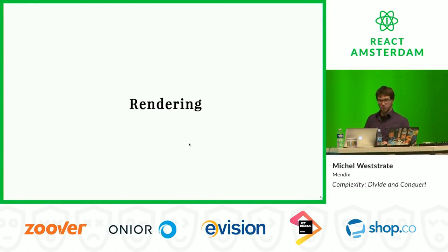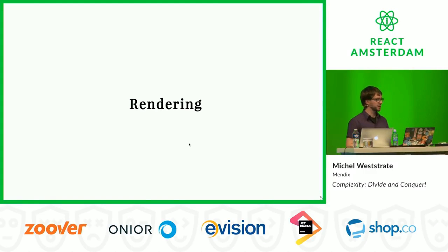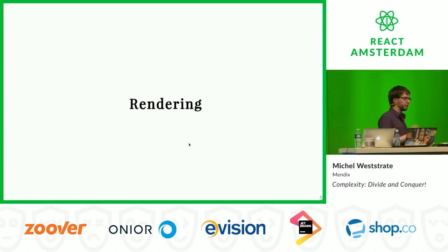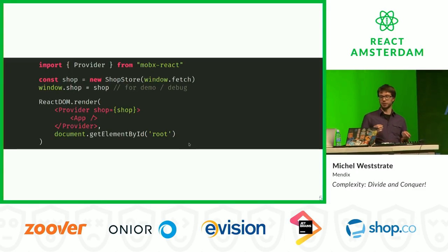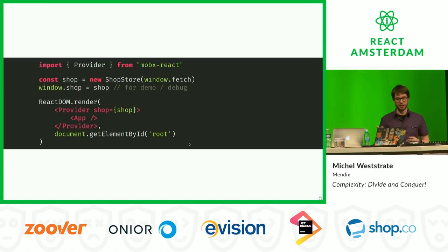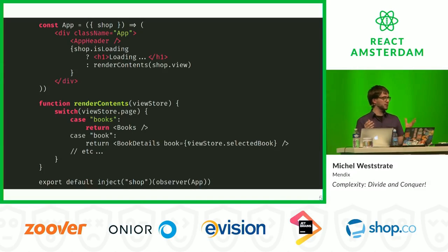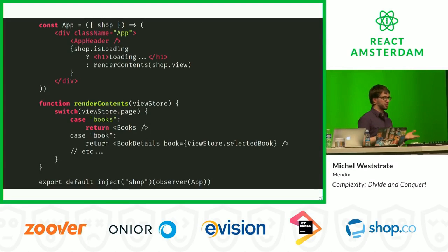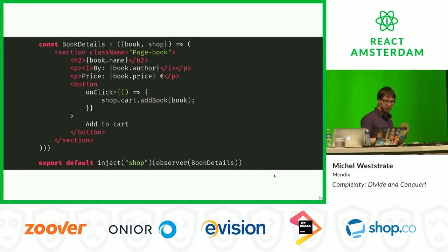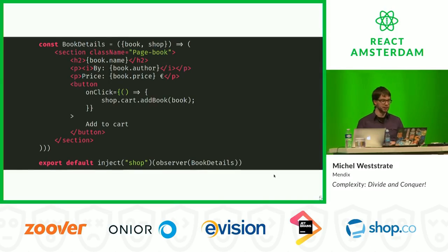When we've done that, we can focus on the second part: the actual rendering of the application, because we still have nothing on screen. When the application fires up, we instantiate the store, provide it to the component tree, and mount our root component. Our root component can be a simple function component that takes a store and based on the view state renders the correct subcomponent for the correct page. These all become really dumb components - just transforming state into a view and nothing else. If somebody clicks a button, we invoke the appropriate action in our stores, and it all becomes a really thin layer.